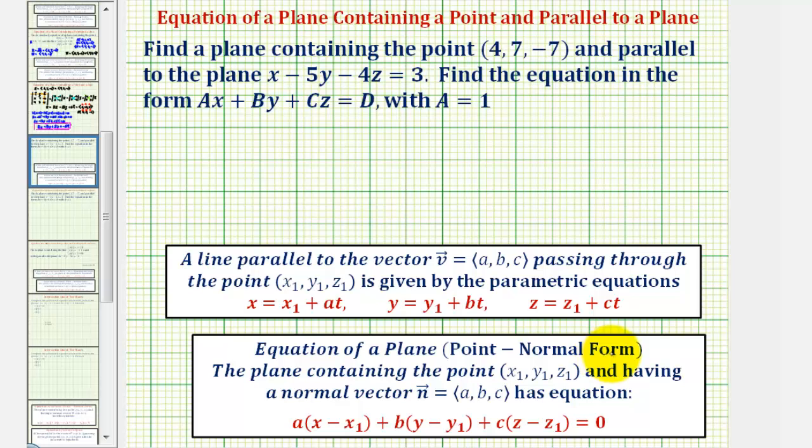If we take a look at the point-normal form of the equation of a plane that contains the point (x₁, y₁, z₁) and has a normal vector n with components (a, b, c), notice how if we distribute, the coefficients of x, y, and z would give us the components of a normal vector.